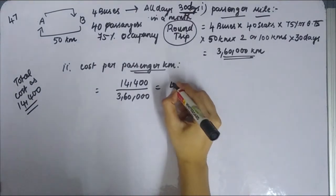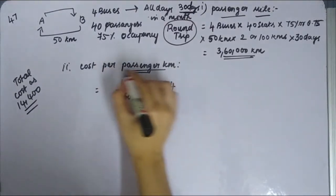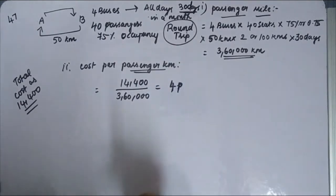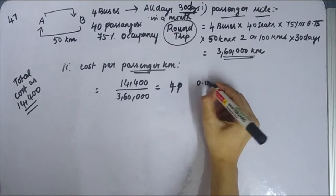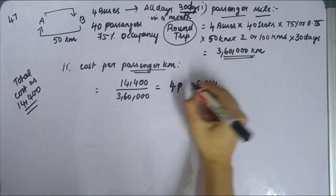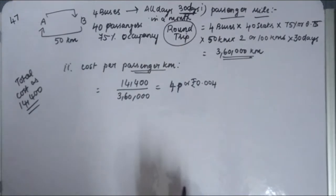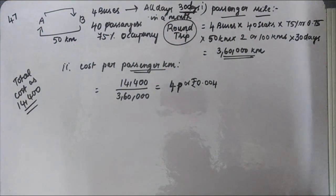So, all you get is your cost per passenger mile is 4 paise, or you can write as 0.04 rupees, or you can simply write it as 4 paise. So this is the summary of your illustration number 47.